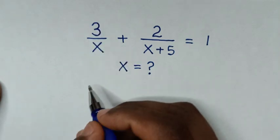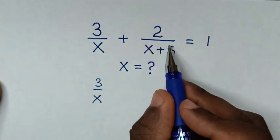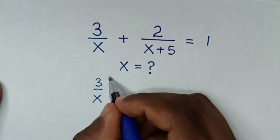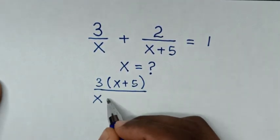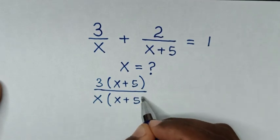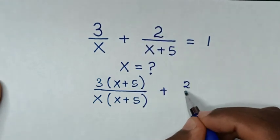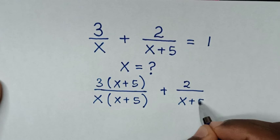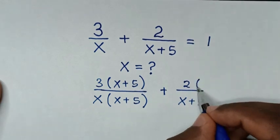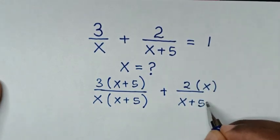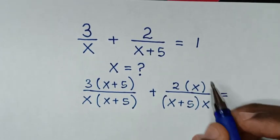So, from this part, which is 3 over x, we multiply by the denominator x plus 5 in numerator and denominator. So we multiply by bracket x plus 5 over bracket x plus 5. Then plus this part, which is 2 over x plus 5, we multiply by x in numerator and denominator. So bracket x over bracket x times x is equal to 1.